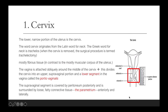First, we talk about the cervix. This is the lower narrow portion of the uterus. The word cervix originates from the Latin word for neck. The Greek word for neck is tracheolos. So when the cervix is removed surgically, the surgical procedure is termed trachelectomy.